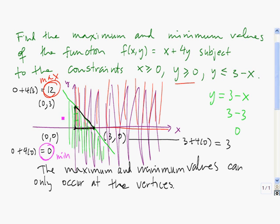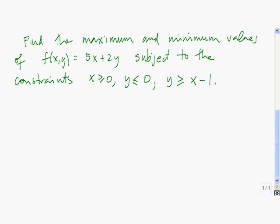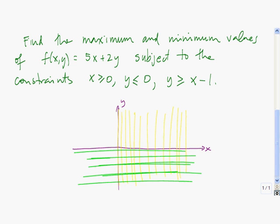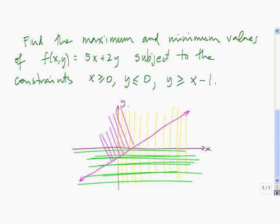So the answer to this problem is that the maximum is 12 and the minimum is 0. Here's a problem for you to try — press pause while you work on it. x is greater than or equal to 0 is this region here. y is less than or equal to 0 is going to be this region down below. And finally, y equals x minus 1 is going to be this line here, but we want y to be greater than or equal to x minus 1, so that's going to be all of this region up here. So we see that the overlap of all three regions is going to be this little triangle right here.